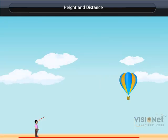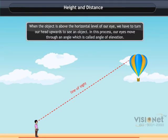Angle of Elevation. When the object is above the horizontal level of our eye, we have to turn our head upwards to see an object. In this process, our eyes move through an angle, which is called the angle of elevation.